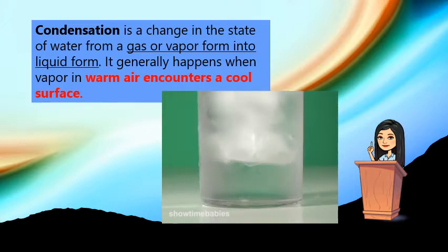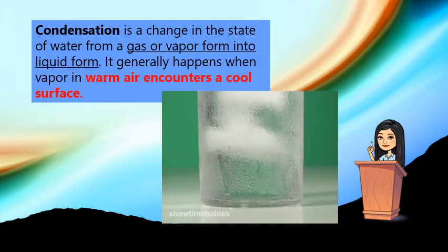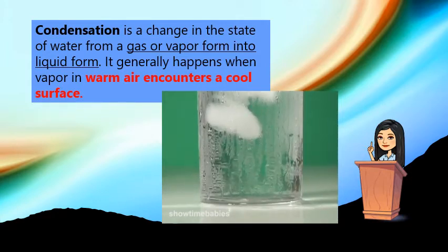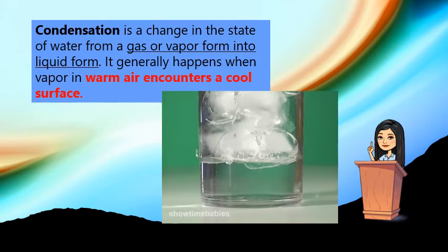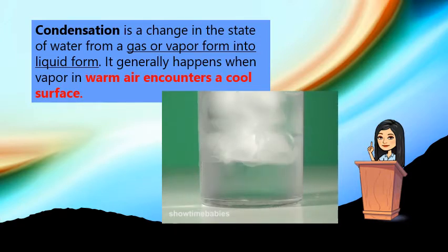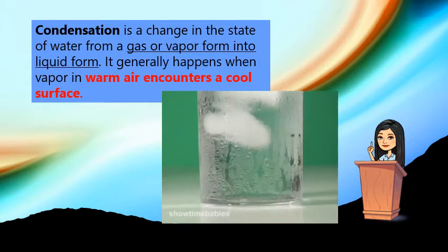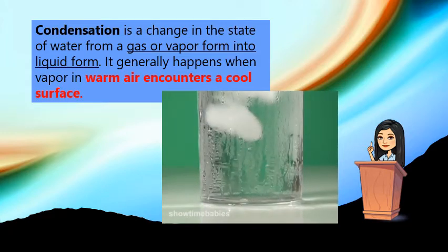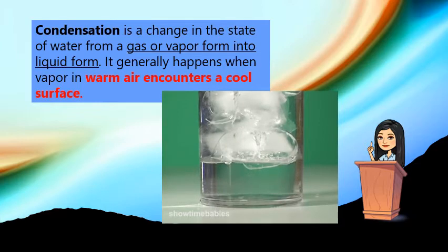Condensation is a gas or vapor changing into liquid form. It generally happens when vapor in warm air encounters a cool surface. So condensation is a change from gas into liquid form, and it only takes place when warm air meets or encounters a cool surface.